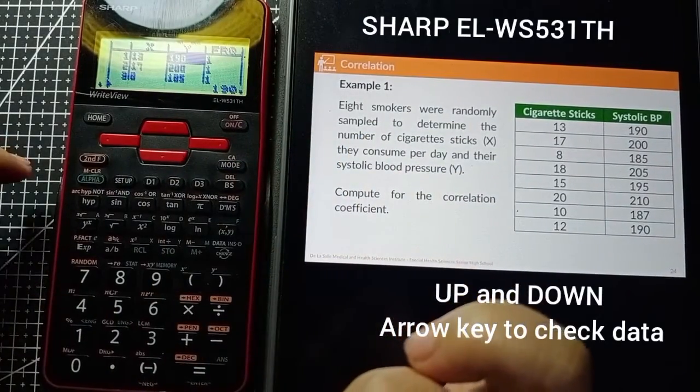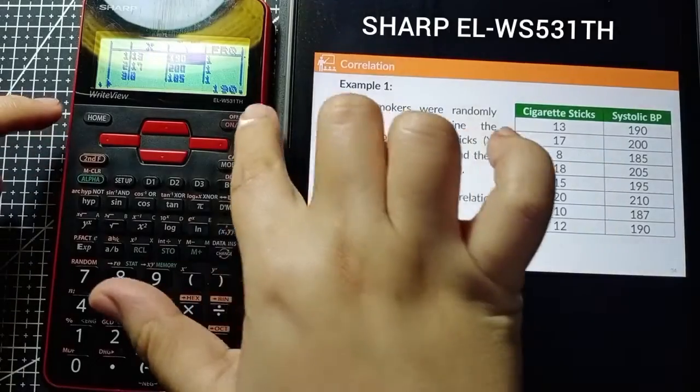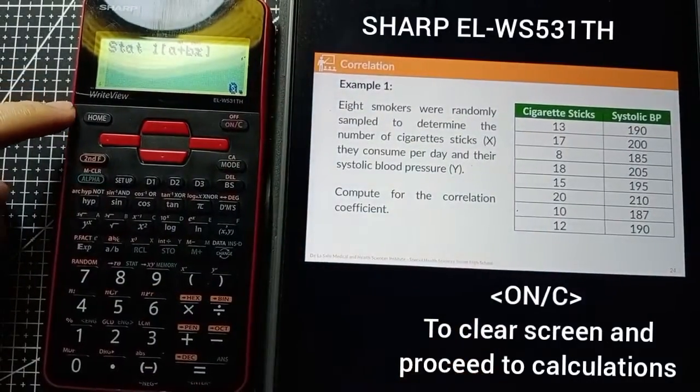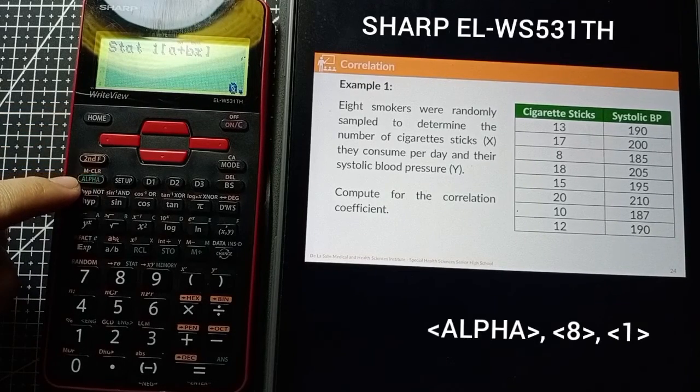Once you make sure that every data is correct, click on ON/C to clear the screen and proceed to calculation. Then to calculate, click on Alpha.